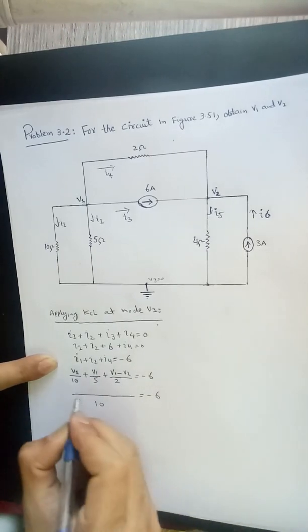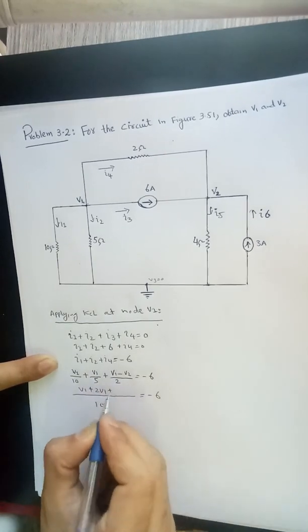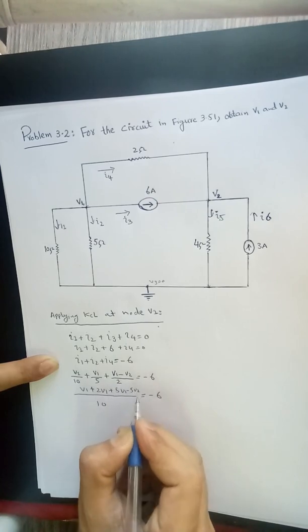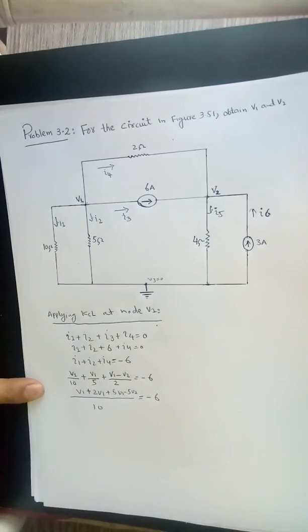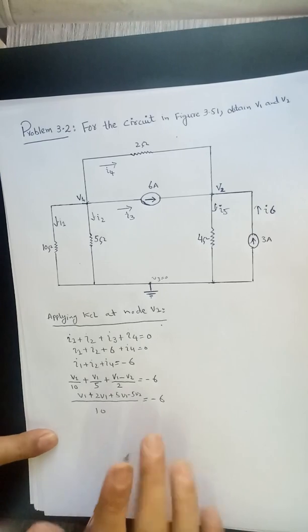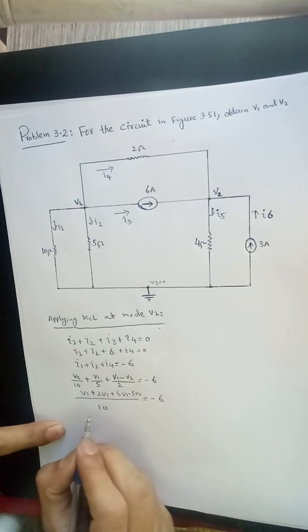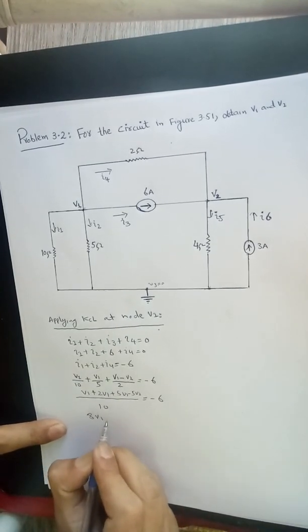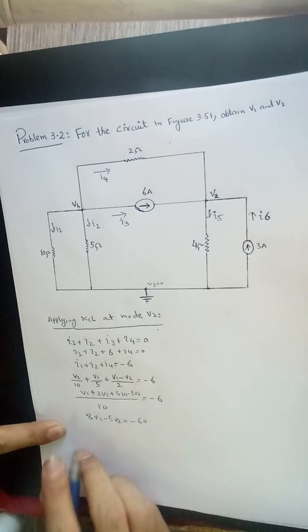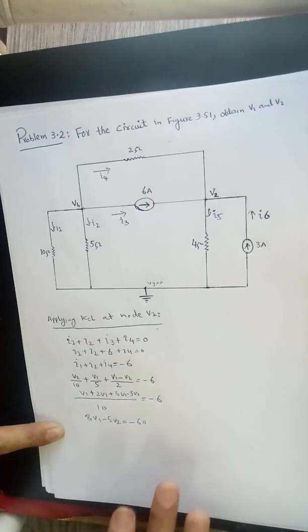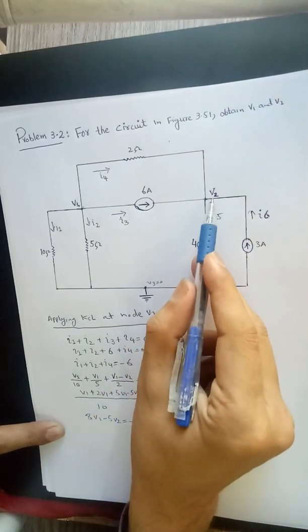So V1 plus 2V1 plus 5V1 minus 5V2. After simplifying and cross multiplication, V1 plus 2V1 plus 5V1, that is basically 8V1 minus 5V2 equal to minus 60. Cross multiplication 10 with minus 6. So this is equation A.